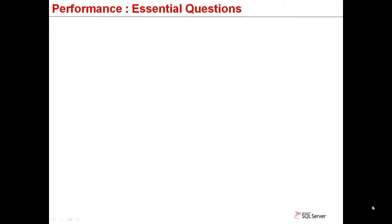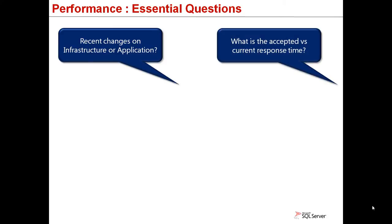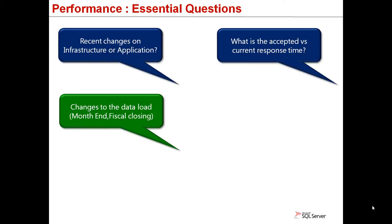It is very important to have one representative from the business application or the client when troubleshooting performance. The first question: are there any recent changes to the physical infrastructure, the application code, or application software? Also consider the accepted versus current response time — the client must be able to measure how much the application has slowed down in numbers. Consider periods such as month-ends, financial closing, and ask if there are changes to the data volume being processed.